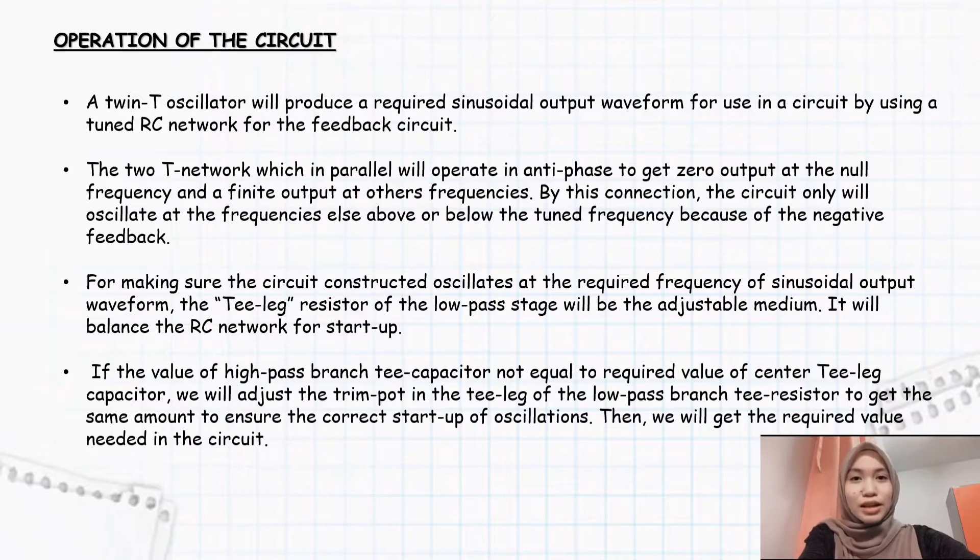Assalamualaikum. My name is Safiya Adiba and I will present about the operation of the circuit. A twin-T oscillator will produce a required sinusoidal output waveform for use in a circuit by using a twin RC network for the feedback circuit. The two networks which are in parallel will operate in anti-phase to get zero output at the null frequency and infinite output at other frequencies.